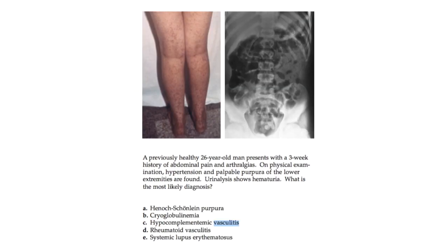Next question: A previously healthy 26-year-old man presents with a three-week history of abdominal pain and arthralgia. On physical examination there is hypertension and palpable purpura over the lower extremities. Urinalysis shows hematuria. The most likely diagnosis is Henoch-Schönlein purpura. Virtually all patients with HSP have palpable purpura; clinical features include abdominal pain, arthritis, and hematuria. Biopsy shows vasculitis with IgA deposits, and complement levels are normal.